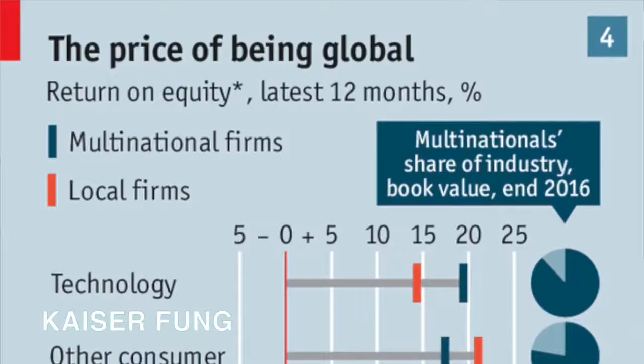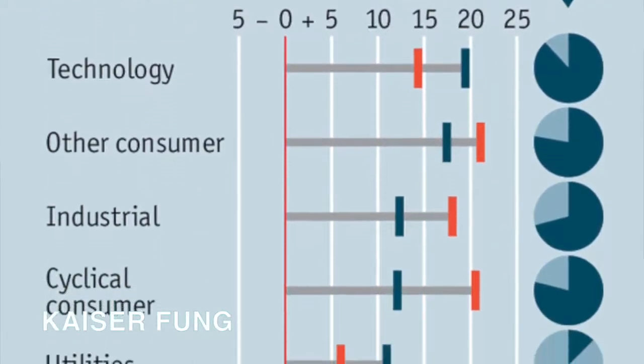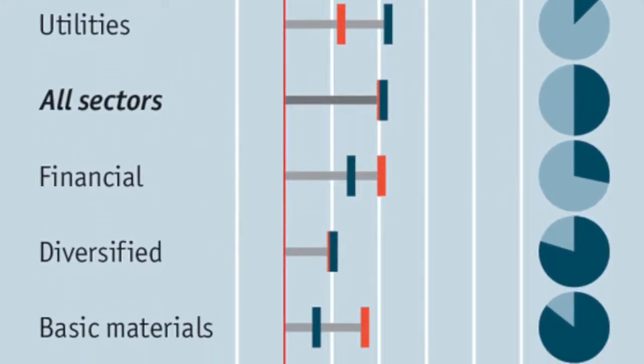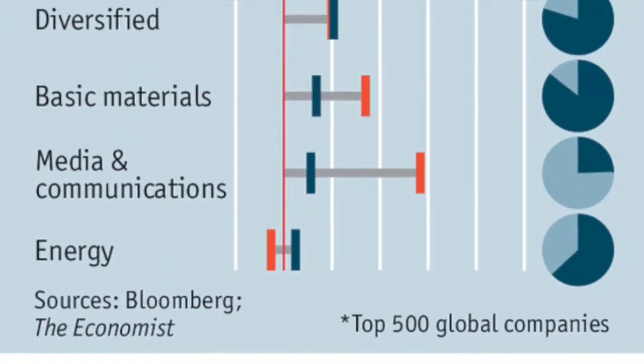How can we enhance this data graphic? How can we bring that message of the data out to the readers more strongly? How can we answer the question: is there a price to bear for being global? Does this price vary by sector? At a secondary level, we also want to know: